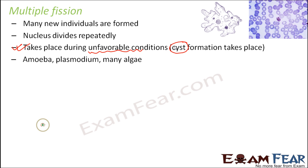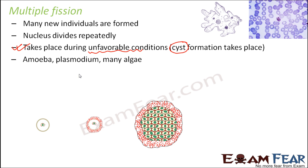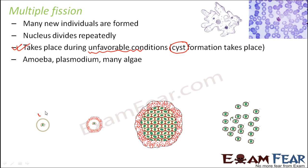Let us see how it happens. This is the parent cell with its nucleus. A cyst develops outside, acting as a protection sheet in unfavorable conditions. Once the cyst is formed, the nucleus keeps dividing multiple times to produce multiple nuclei, all well protected by the cyst. When favorable conditions return, the cyst breaks down and these nuclei are released, each giving rise to a new organism. So from just one parent cell, multiple daughters — eight or more — can be produced. This is the concept of multiple fission.